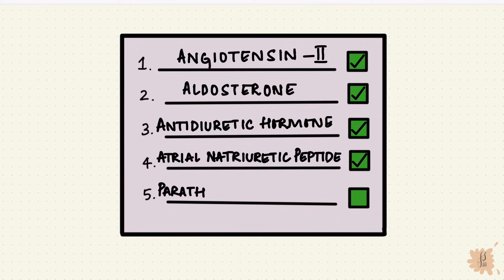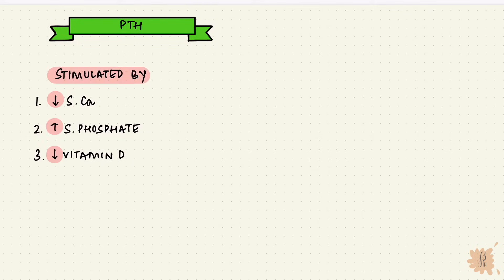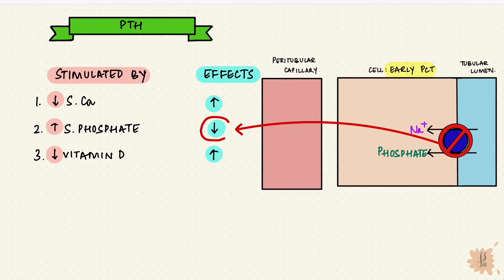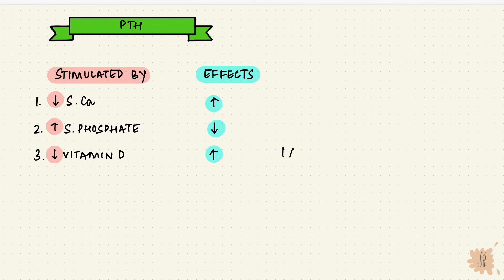The fifth and last hormone is the parathyroid hormone. PTH is released in response to three things: a low serum calcium level, high serum phosphate levels, or low vitamin D levels. So it increases serum calcium, reduces serum phosphate, and increases vitamin D synthesis. To do this, it has effects on the kidney: in the early PCT, it reduces phosphate reabsorption, increasing its excretion; in the distal tubule, it increases calcium reabsorption, raising serum calcium levels; and in the PCT, it stimulates 1-alpha-hydroxylase, increasing vitamin D synthesis.